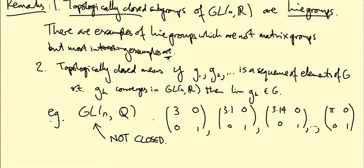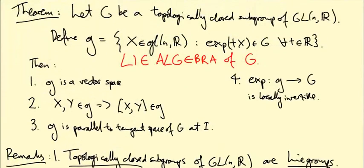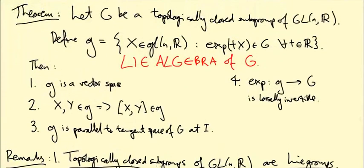And why do I want to throw these guys away? This looks like a completely reasonable and interesting group, and it is. But if you look at the theorem, it doesn't actually work. It doesn't actually hold for this group. Because this vector space little g turns out it would have to be 0. If you exponentiate t times a matrix, you want that to be a rational matrix for all t. That's not going to happen, like if you pick t equals π or something. So this vector space little g is just going to be the 0 matrix.